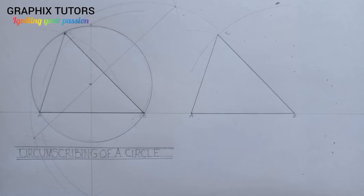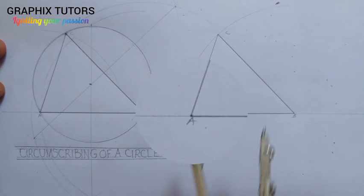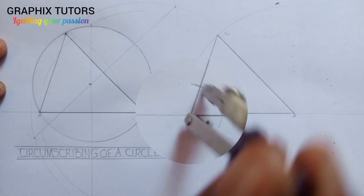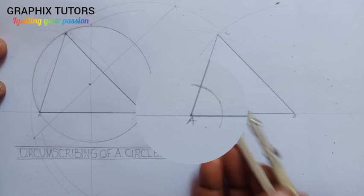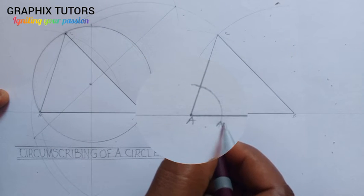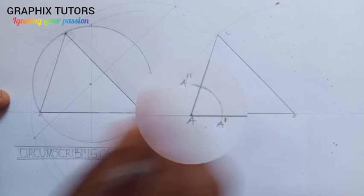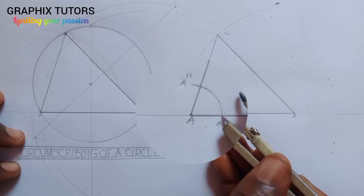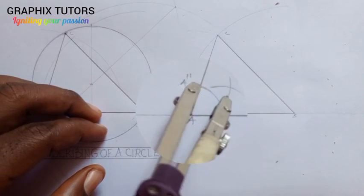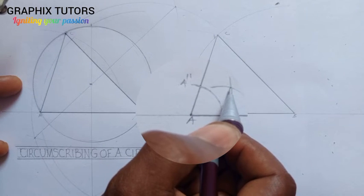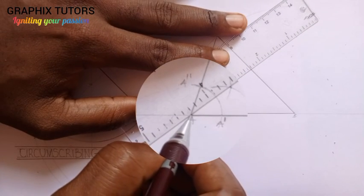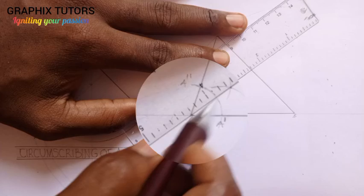To bisect angle A: place the compass at point A and strike two arcs crossing the two sides of the angle. Where the compass arc cuts the sides, call those points A' and A''. Place the compass at A' and strike an arc, then place it at A'' and strike another arc. Where they meet, draw a line from A passing through that intersection point.